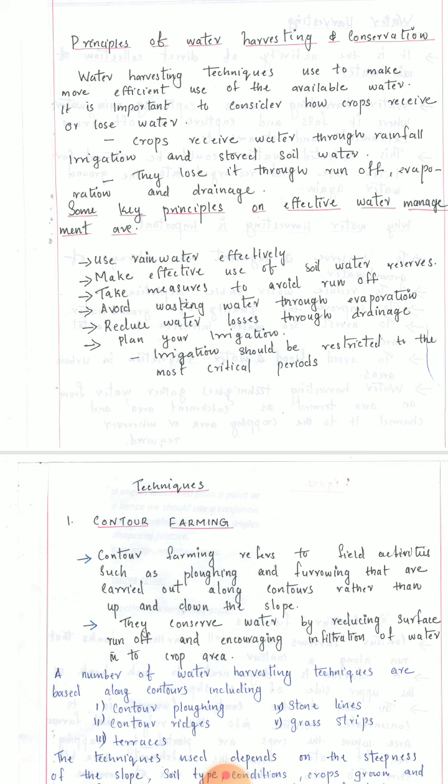Coming to the principles of effective water management, the first is to use rainwater effectively. During the rainy season we need to collect and store rainwater in structures, and then make use of it during periods of unavailability. Next is to make effective use of soil water reserves. The soil has to be maintained properly so that evaporation of water will not take place from the soil. The effective use of soil moisture should be carried out. Next is to take measures to avoid runoff — instead of allowing water to flow on the surface, we can store this water.